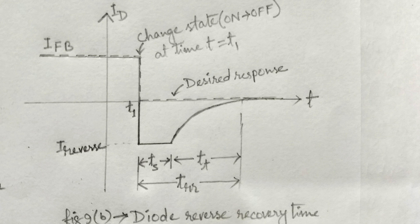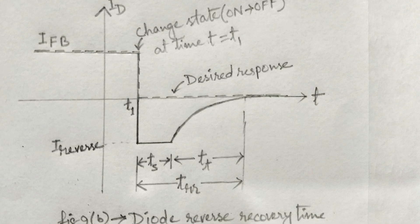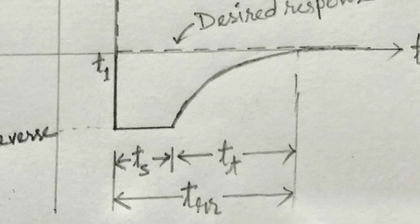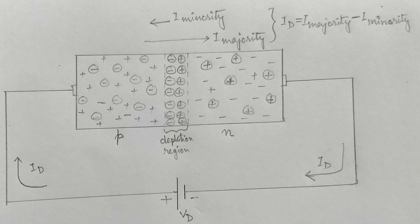And stay in this level for time TS, that is storage time. This is the time taken by the minority carriers to move to their respective majority side. That is, holes moved to p-type and electrons to n-side.